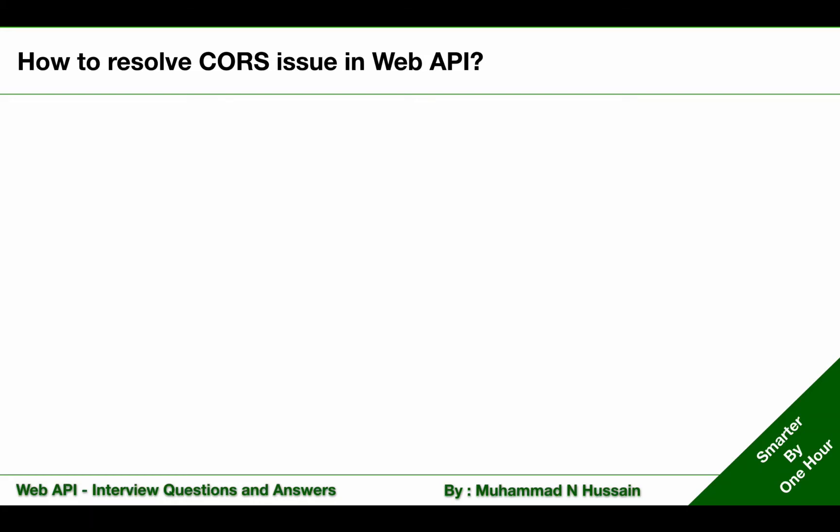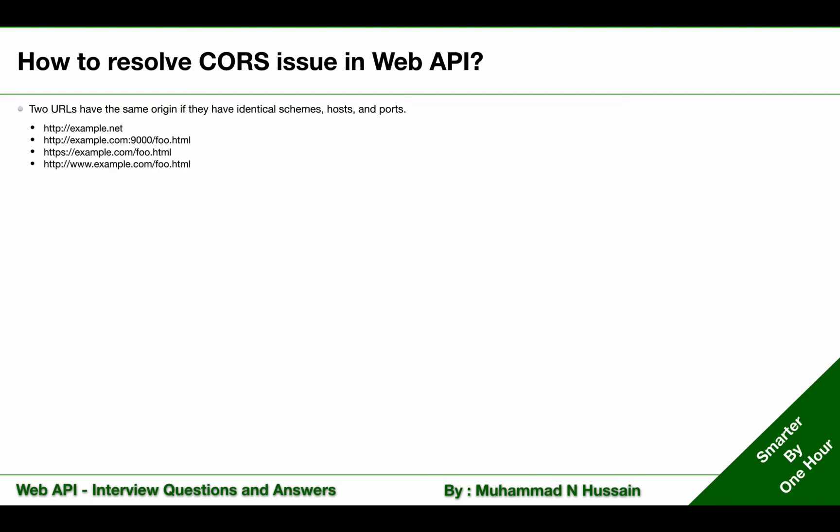How to resolve CORS issue in Web API. Before answering this question, I want to highlight a few things first. Remember: two URLs have the same origin if they have identical schema, host, and port. Based on this, could you guess whether these URLs have the same origin?